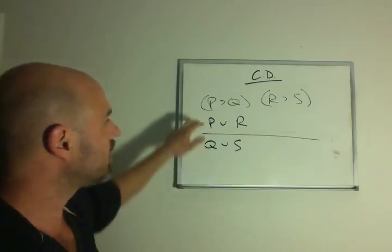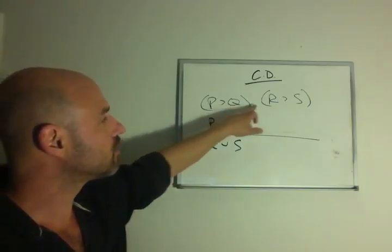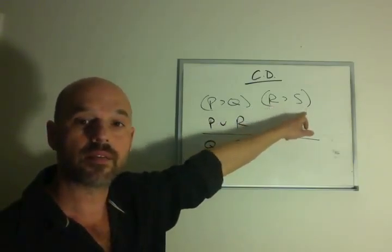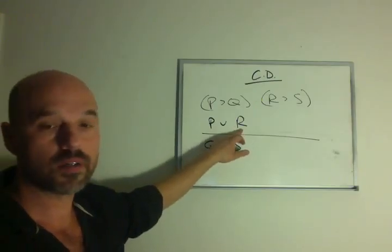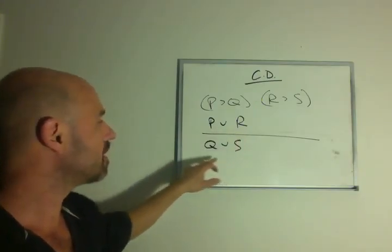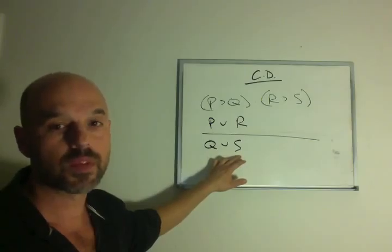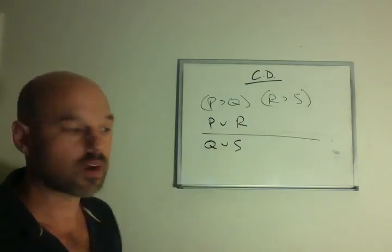That's the constructive dilemma, right? If the Jets win, you win $5. And if the Giants win, you win $10. Someone tells you that either the Jets or Giants won. Maybe both. That means you won $5 or $10. Maybe both. That's the constructive dilemma.